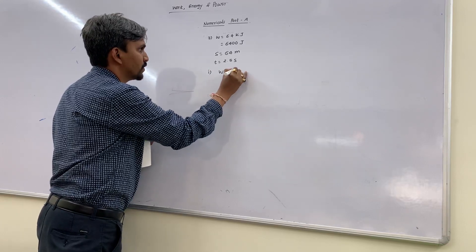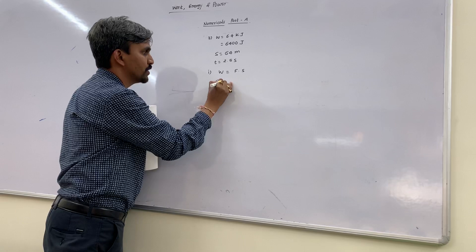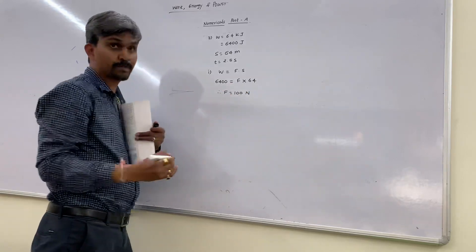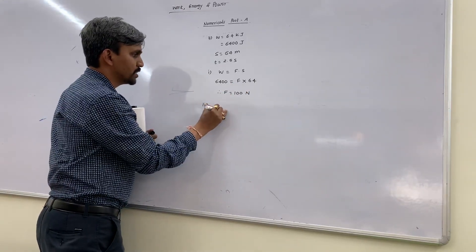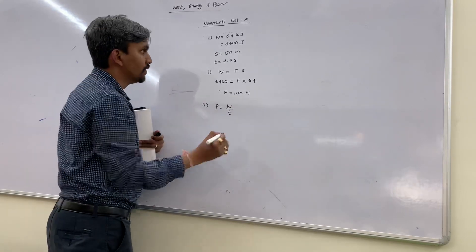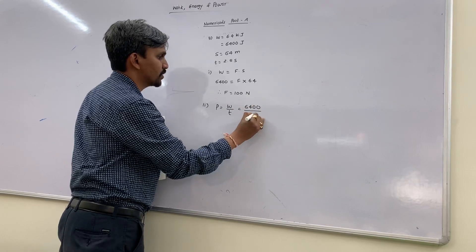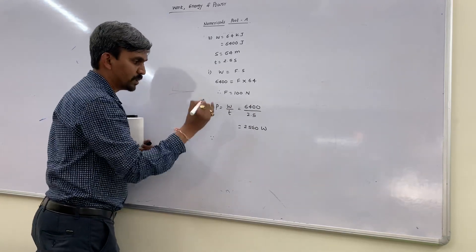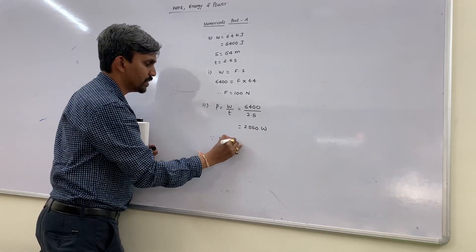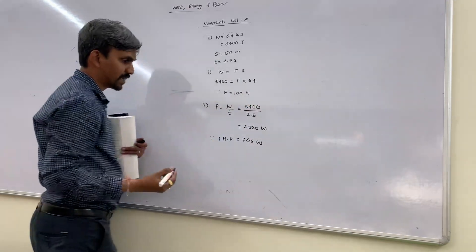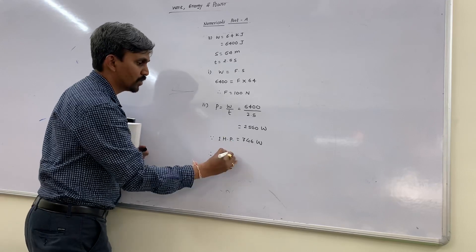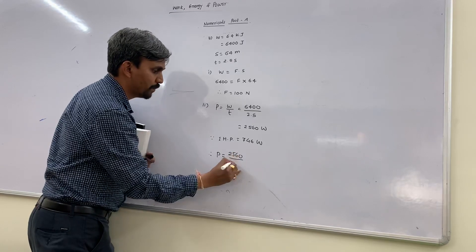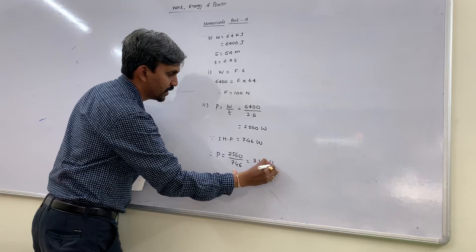First part: work = force × displacement, so 6400 = F × 64, giving F = 100 Newton. Second part: power = work / time = 6400 / 2.5 = 2560 Watts. To convert to HP: 1 horsepower = 746 Watts, so power = 2560 / 746 = 3.43 HP.